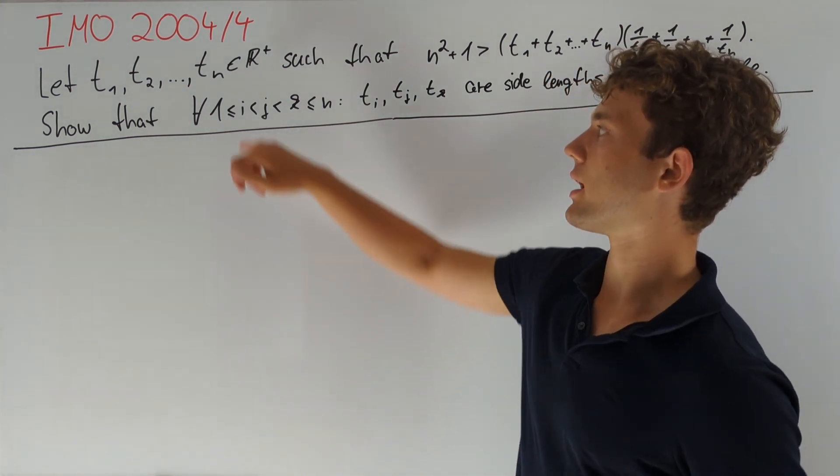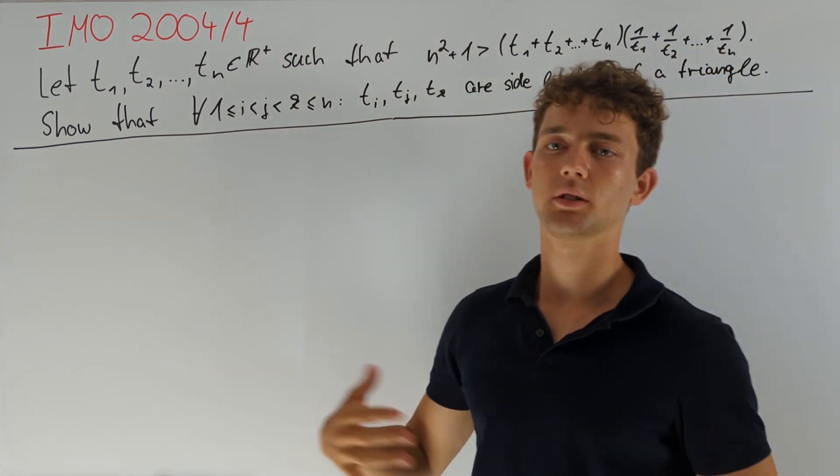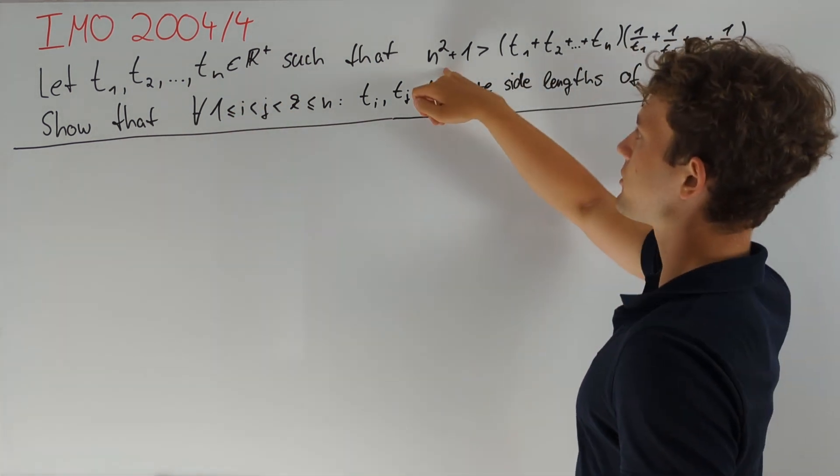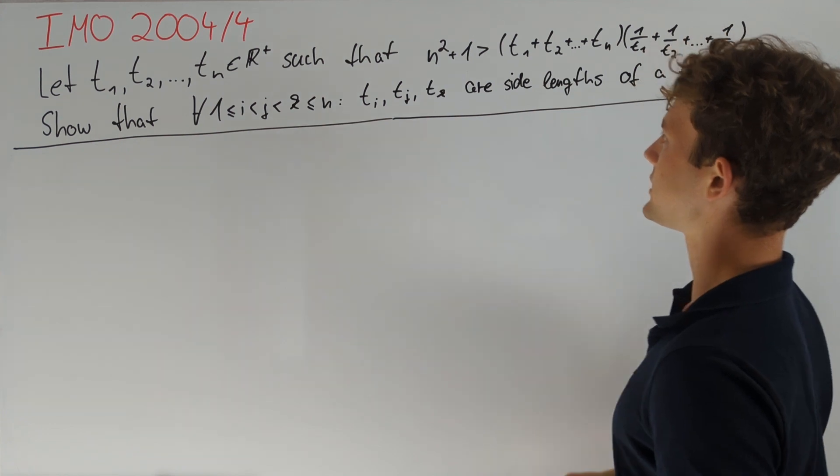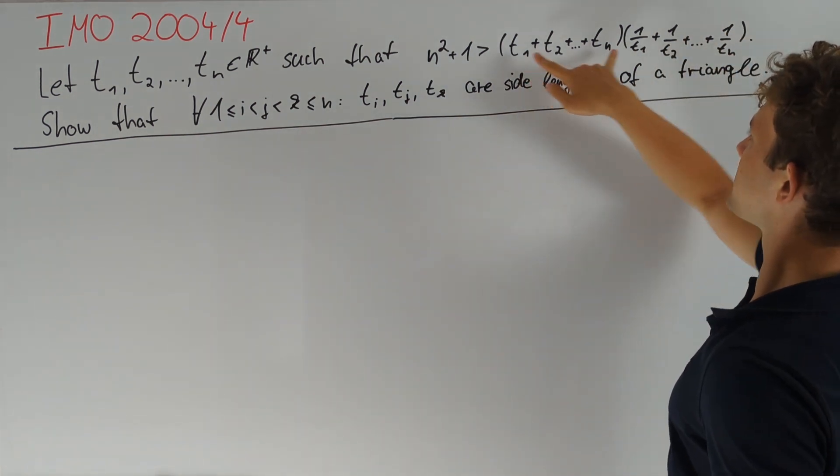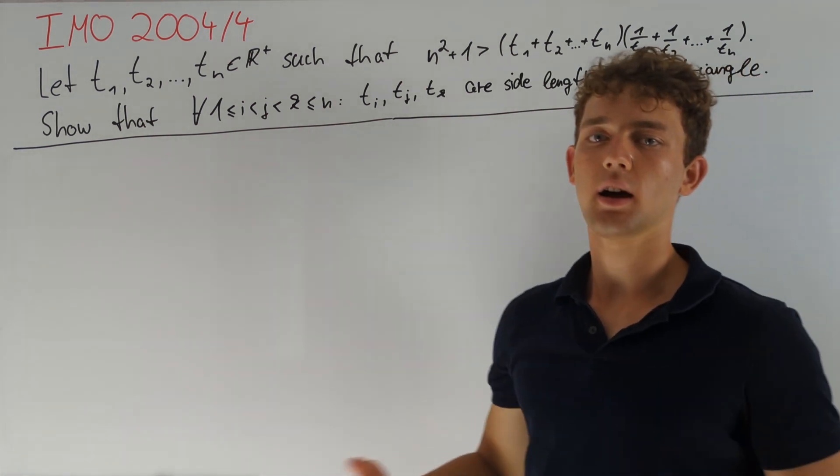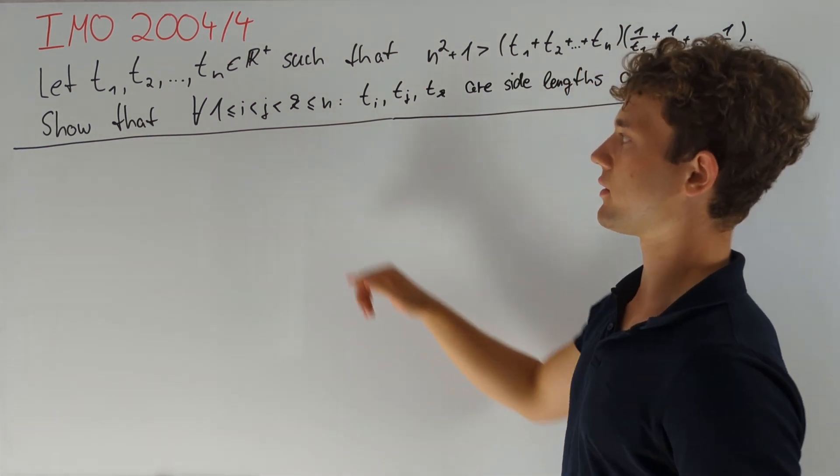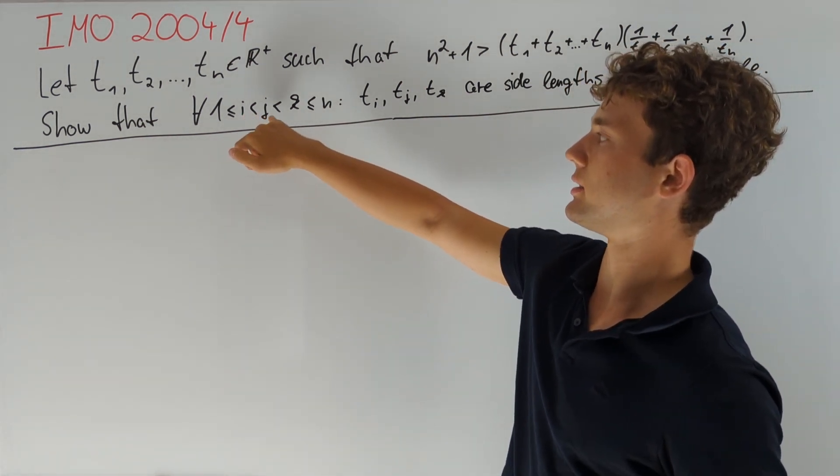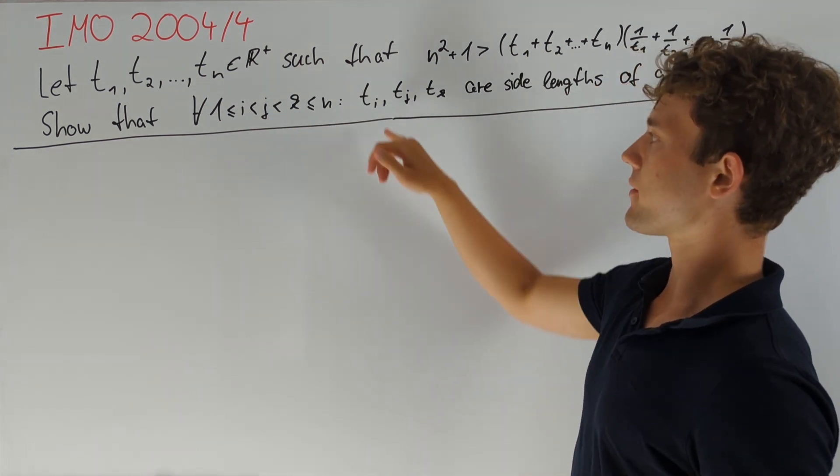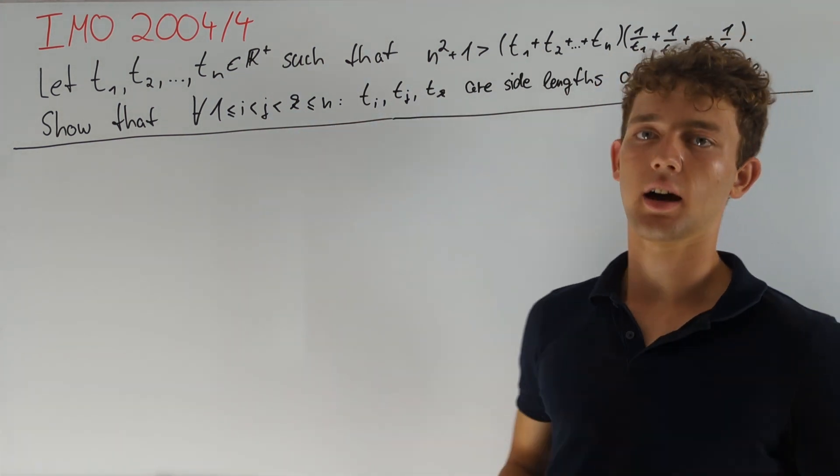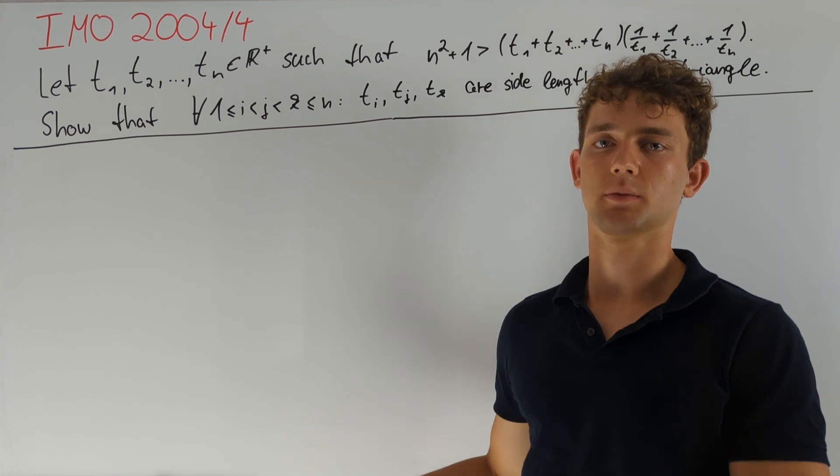We are given n positive real numbers t₁, t₂, ..., tₙ such that n² + 1 is larger than the sum of the tᵢ's times the sum of the inverses of the tᵢ's. We are asked to prove that for any indices i < j < k, we have that tᵢ, tⱼ, tₖ are side lengths of some triangle.